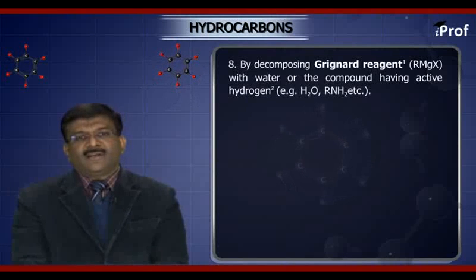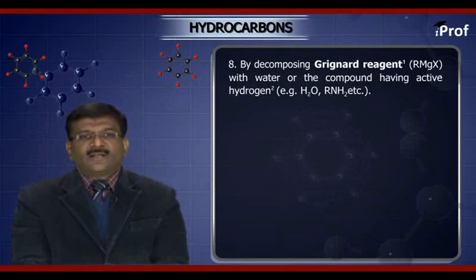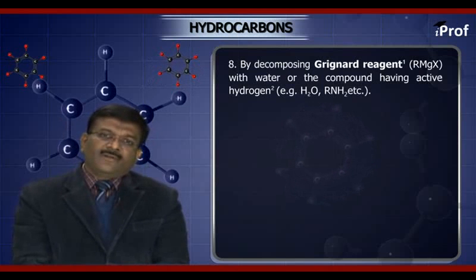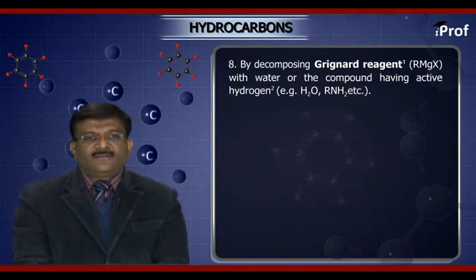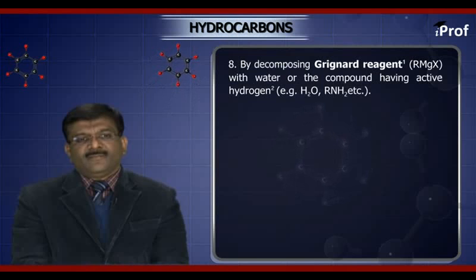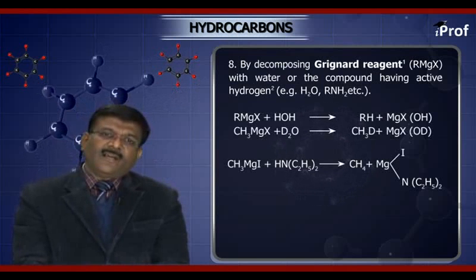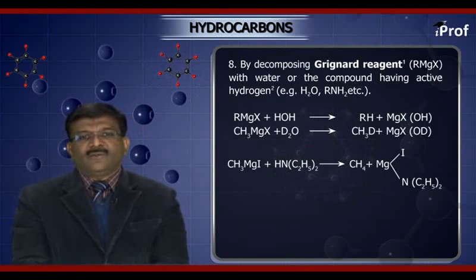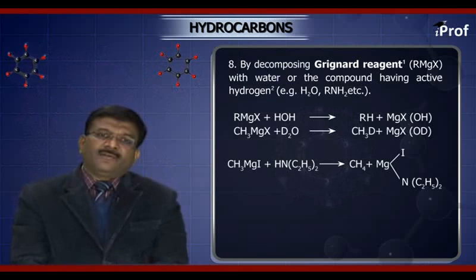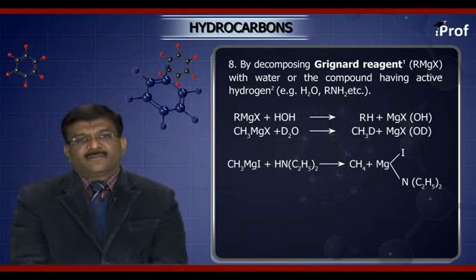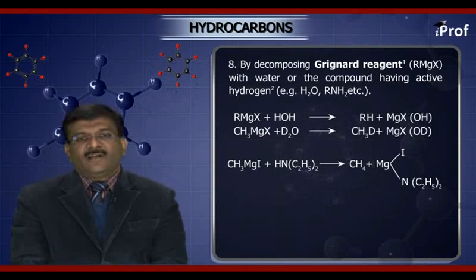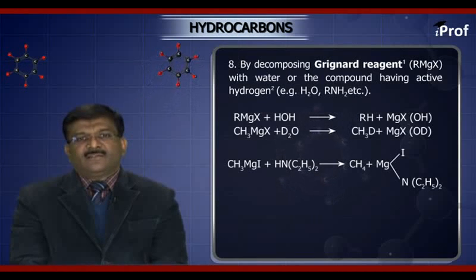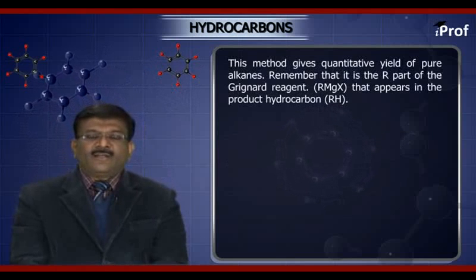Next method: by decomposing the Grignard reagent with water or other compounds having active hydrogen. The Grignard reagent is an organometallic compound. The compounds having active hydrogens include water and primary amines. The reaction is: RMgX (alkyl magnesium halide) reacts with water to give RH (alkane) along with the formation of Mg(OH)X. This method gives quantitative yield of pure alkanes.